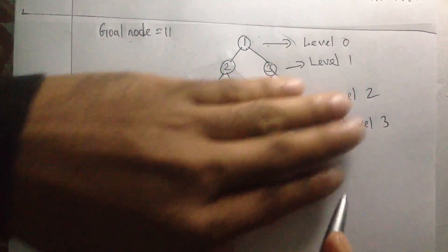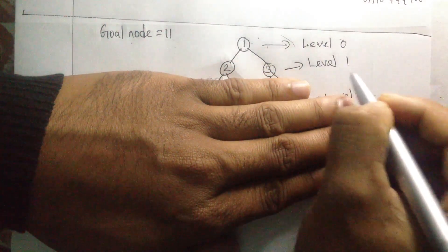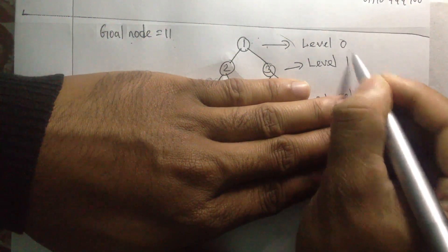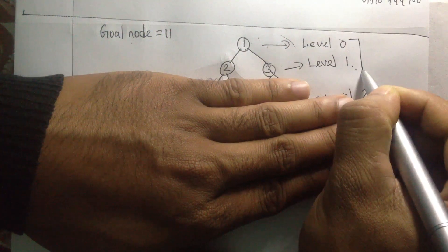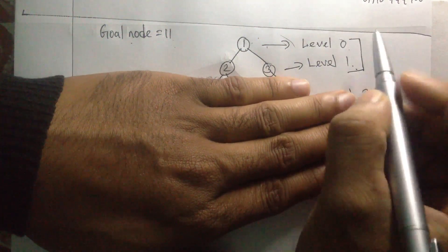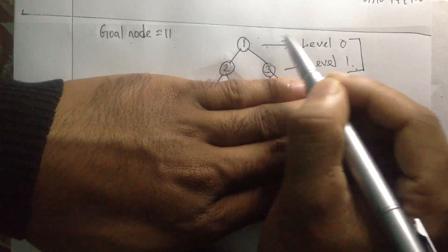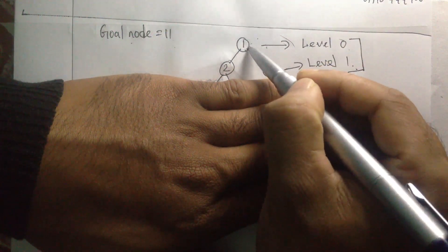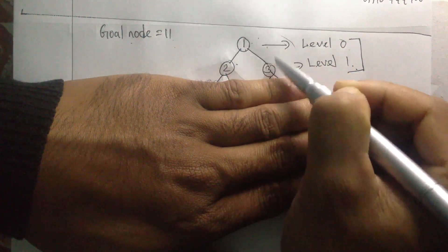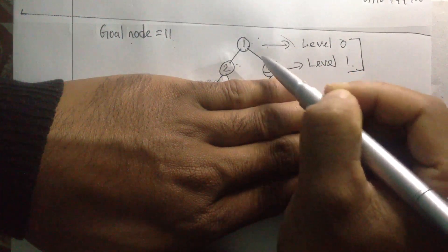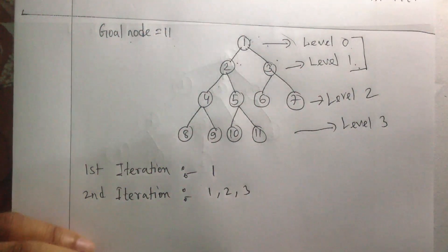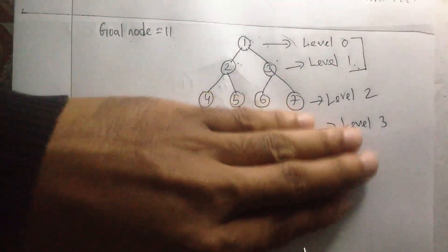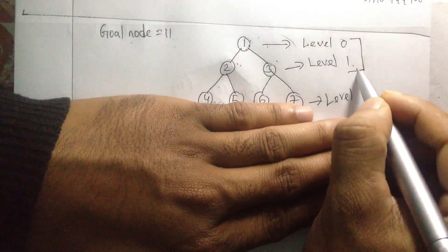In the second iteration I increase the level, so now I have level 0 and level 1. I start from level 0 and go to level 1, using DFS — root, left, right — giving me nodes 1, 2, 3. Have we found our goal node? No, not yet. So let's increase the level.